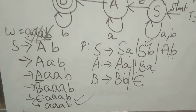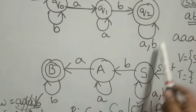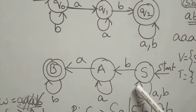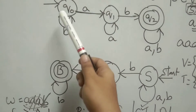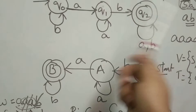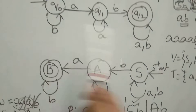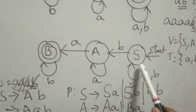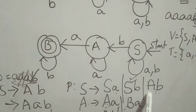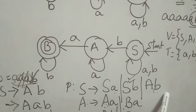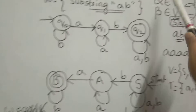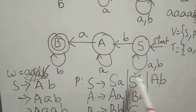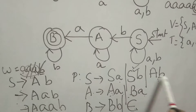So, to design left linear grammar, there is only one small precaution: you design the finite automata the same way. But the final state must be the starting state in left linear grammar, and the starting state is the final state. After that, you have to change the directions of the arrow marks. The productions must be in the form of variable followed by terminal.